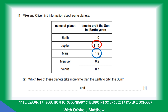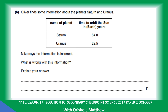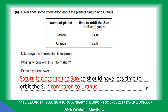Looking at Jupiter and Mars: Jupiter takes almost 12 years and Mars takes about 1.9 years. Oliver finds information about Saturn and Uranus. Mike says the information is incorrect. What is wrong with it? Saturn is closer to the sun, so it should have less time to orbit the sun compared to Uranus.